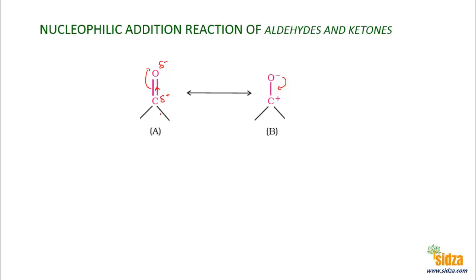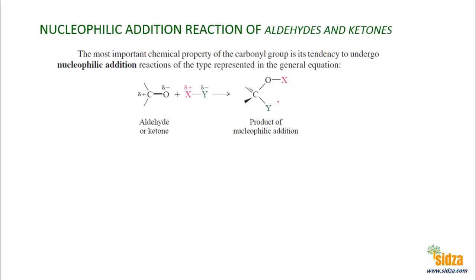The carbonyl group is polar, and because of the electron-deficient carbon center, nucleophiles can attack on this positively charged, electron-deficient carbon. That's why aldehydes and ketones undergo nucleophilic addition reactions — nucleophiles attack on the carbon, and after that the electrophile attacks on the oxygen. In a nucleophilic addition reaction, a nucleophile attacks on the carbon and an electrophile attacks on the oxygen.